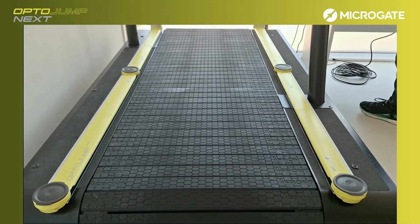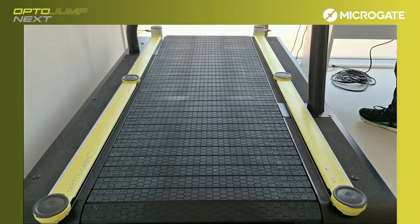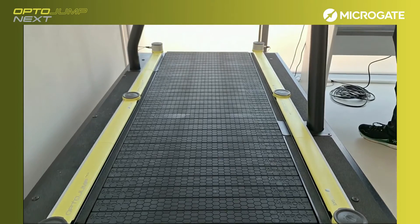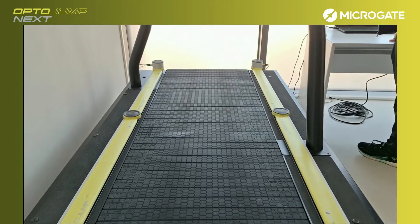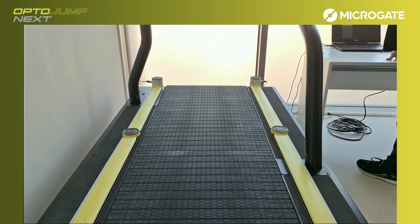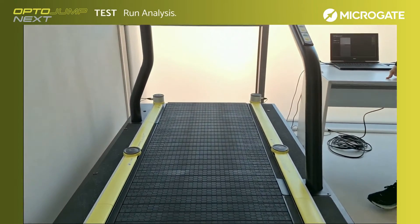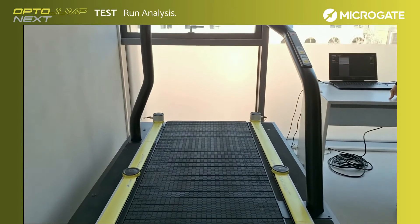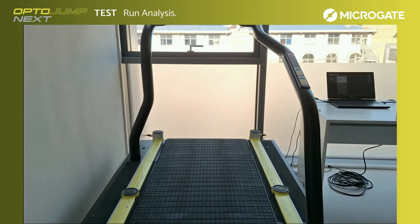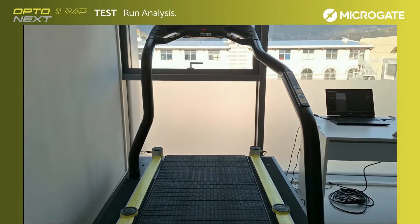With opto-jump, it is possible to perform a run analysis with a single-meter kit and, if available, with an additional meter kit to cover the length of the treadmill.